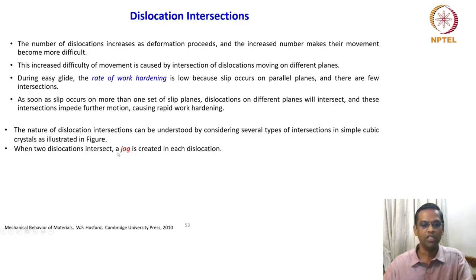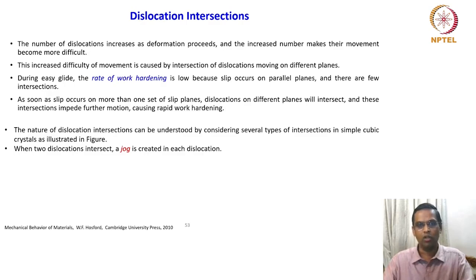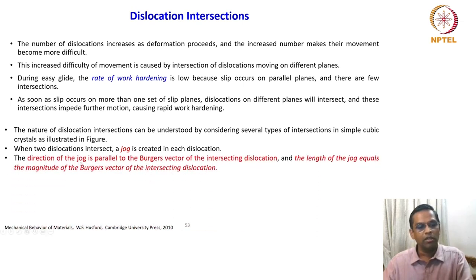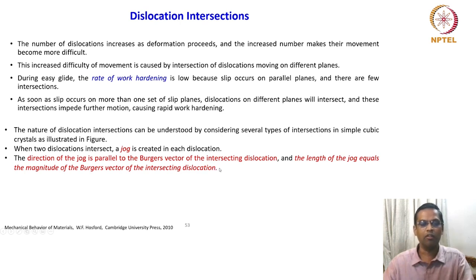We are now introducing a new term: jog in a dislocation. When two dislocations intersect, a jog is created. The direction of the jog is parallel to the Burgers vector of the intersecting dislocation, and the length of the jog equals the magnitude of the Burgers vector of the intersecting dislocation. These are the key characteristics of a jog.